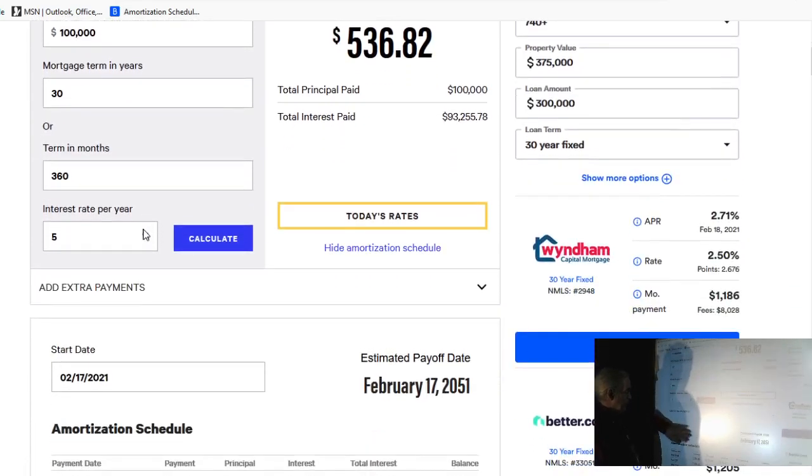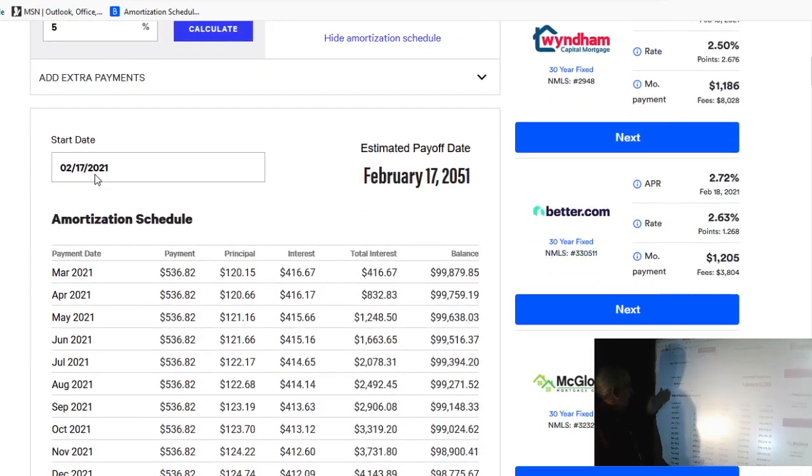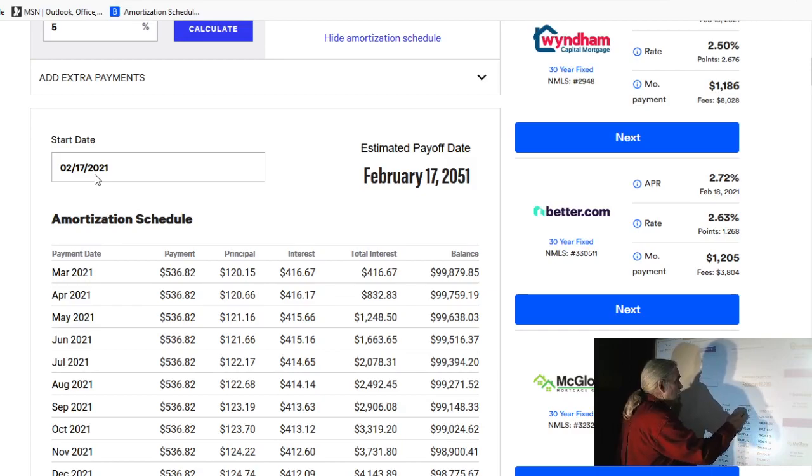you end up with an amortization schedule that shows you every payment, your payment, how much goes to principal, how much goes to interest, and total interest paid.